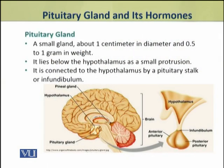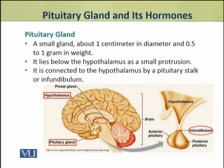The pituitary gland is a small gland about one centimeter in diameter and 0.5 to 1 gram in weight. It lies below the hypothalamus as a small protrusion. It is connected to the hypothalamus by a pituitary stalk which is known as the infundibulum.